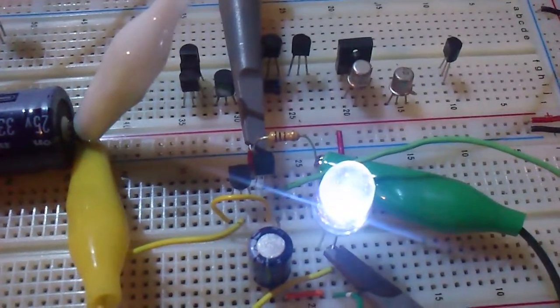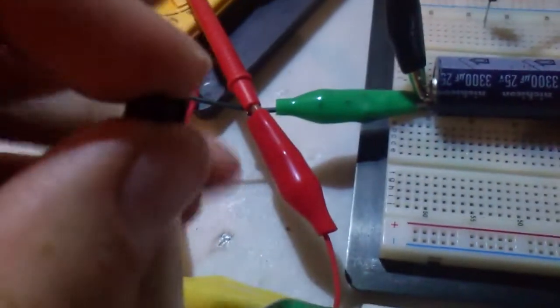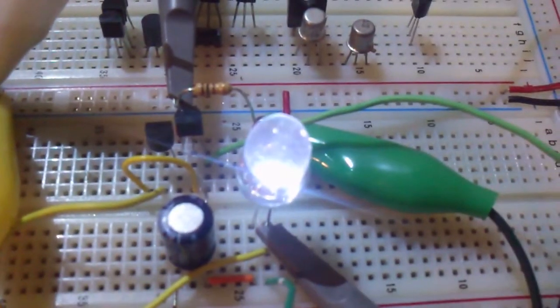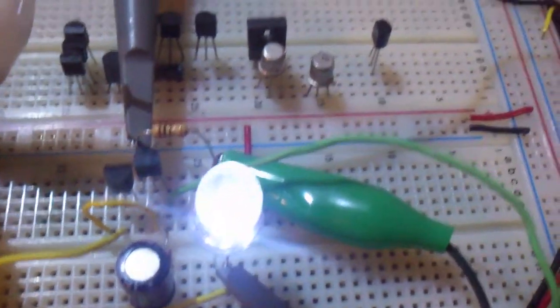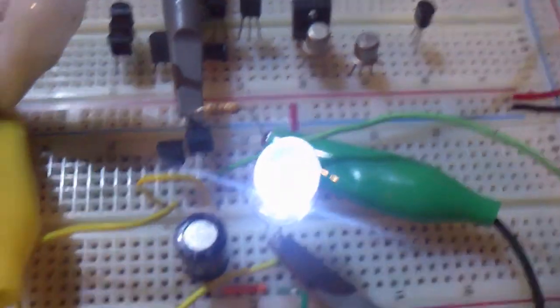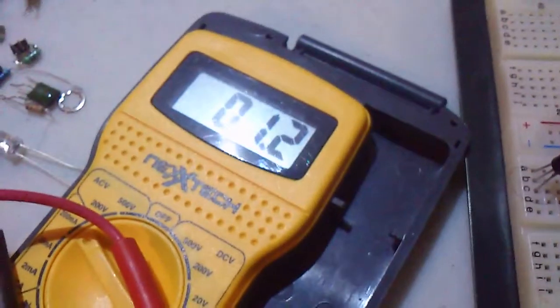But here you go. As you can see, you can vary it. It's a 2K pot right there that I have. You can actually see the LED vary here. 1 milliamp.